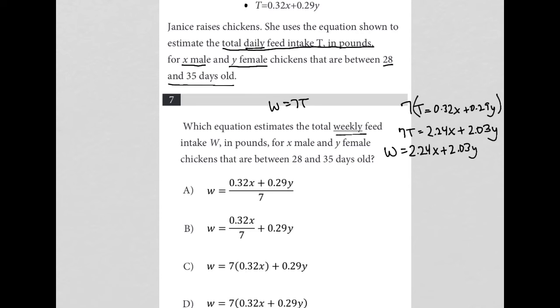So I'm just going to replace this and say W equals 2.24X plus 2.03Y. And I notice that there is one answer choice that will, in fact, give me this. It's not as straightforward as I was hoping.